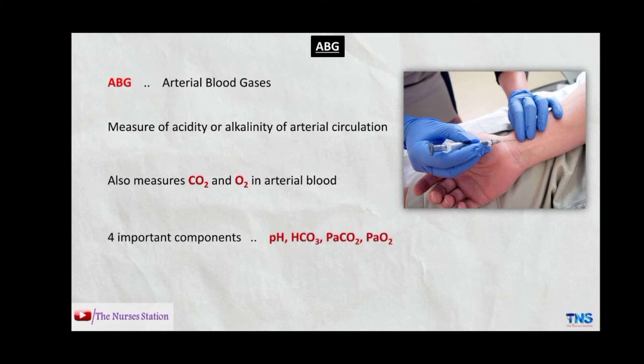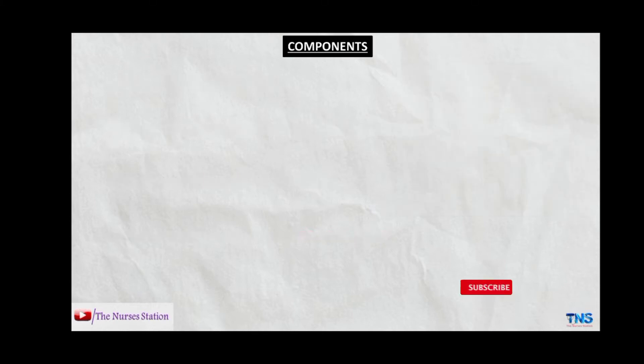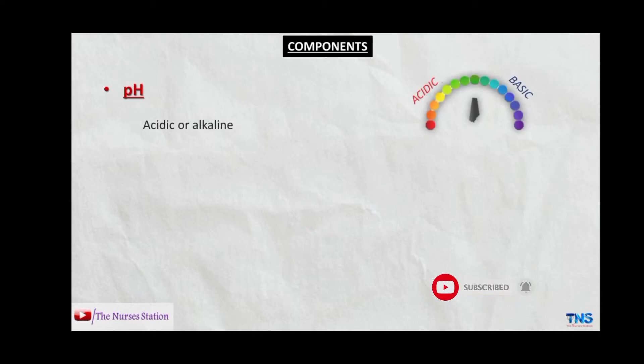The four important components included in ABG are pH, HCO3 or bicarbonate, PaCO2, and PaO2. Let's talk about these components one by one. The first is pH — it is the measure of acidity or alkalinity of your blood. The less the pH, the more acidic it is, and the more the pH, the more alkaline it is.